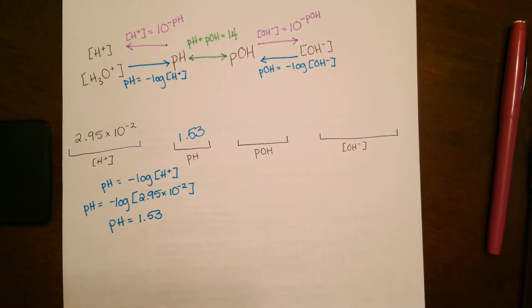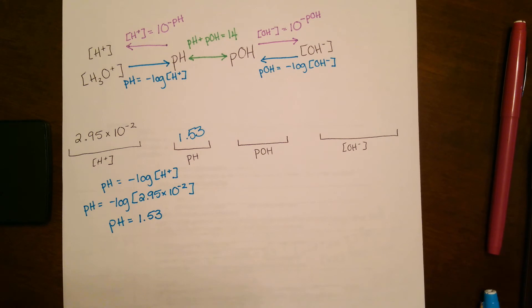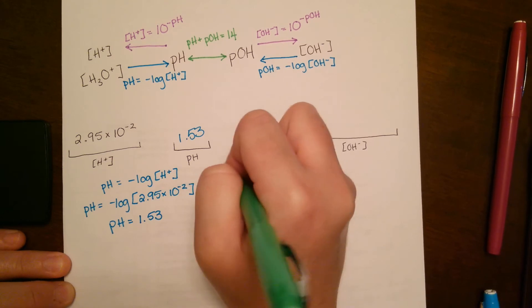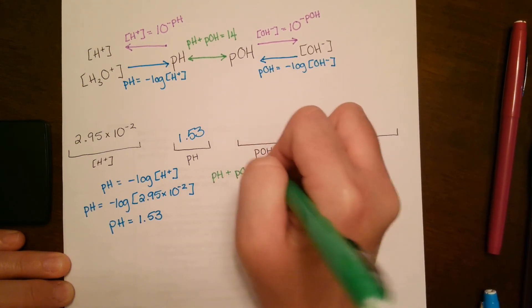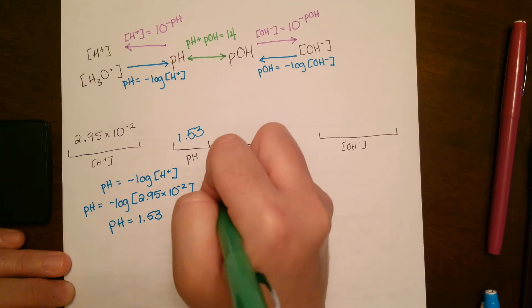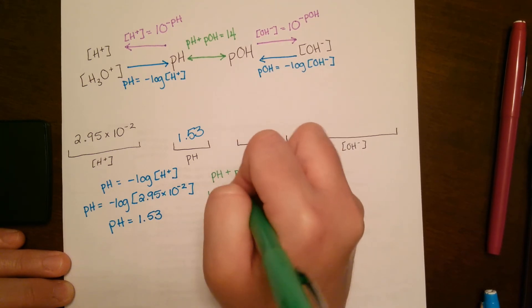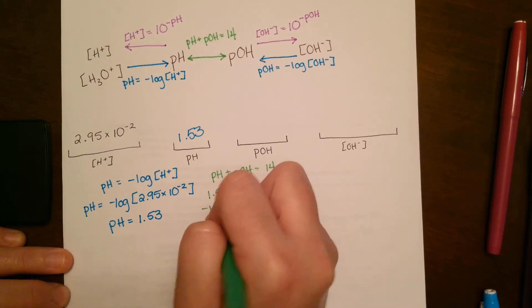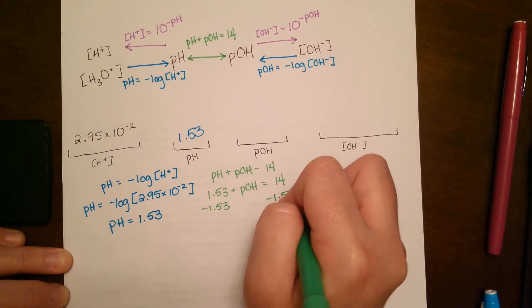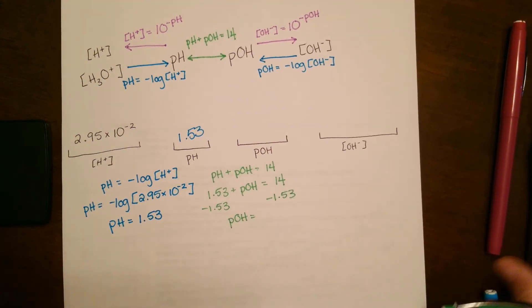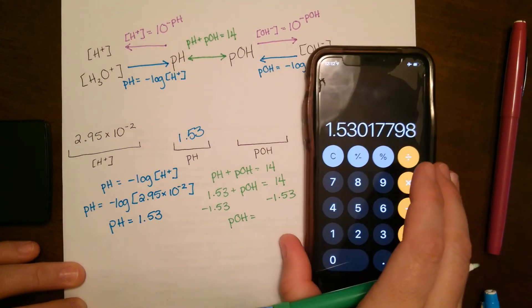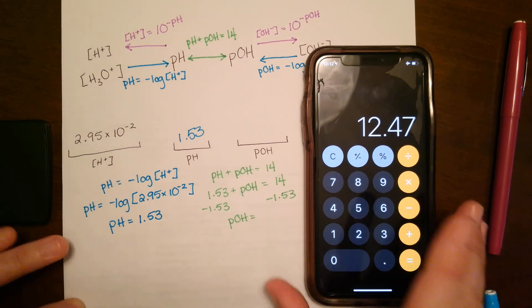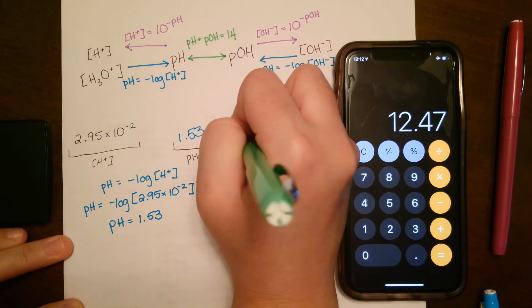So now that we have the pH, we're able to move from pH all the way over to pOH. And we're now able to use that next equation. So pH plus pOH is equal to 14. So we plug in the pH we just got, 1.53 plus our pOH, which is our unknown, equals 14. Subtract 1.53 from both sides to get that variable by itself. And for this one, 14 minus 1.53, and we get that the pOH is 12.47.